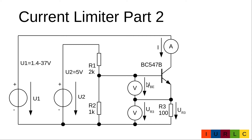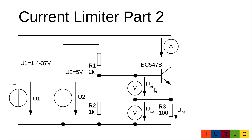Finally, we want to check whether the change of base-emitter voltage caused by temperature fully explains the current change in our current limiter circuit, and whether the transistor warming does not exceed the maximum allowed junction temperature. The current limiter circuit from part 1 has a transistor, a 100 Ω current-sense resistor, a 2kΩ/1kΩ voltage divider on the base, a control voltage of 5 V, and an adjustable collector voltage from 1.4 to 37 V. We will measure collector current, base-emitter voltage, and voltage at the current-sense resistor R3.